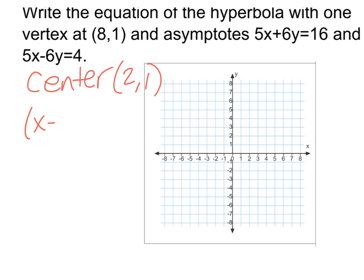So we can say (x-2)² minus—and then we have something down here—minus (y-1)² divided by something equals 1.